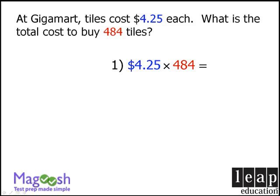A faster method is to approximate. We can say that the tiles cost roughly $4 each, and we want to buy roughly 500 of them. When we do this, we see that our total cost is approximately $2,000.